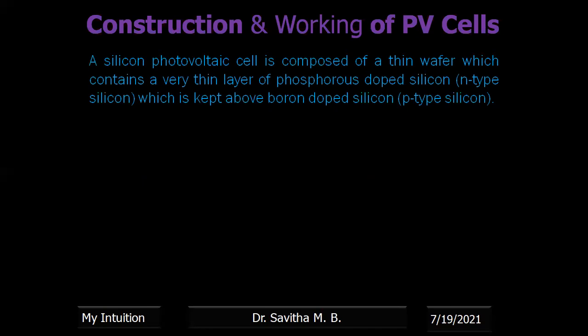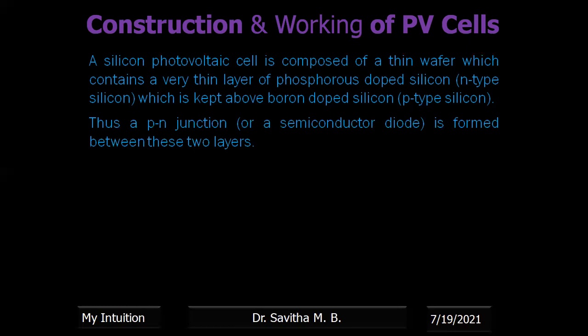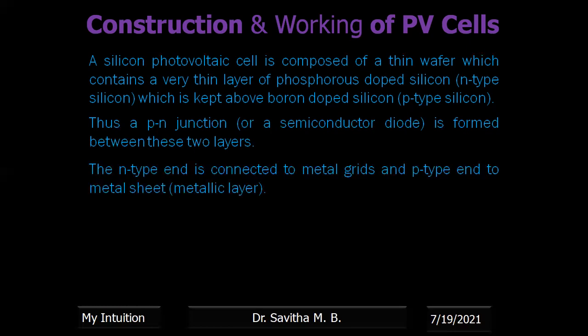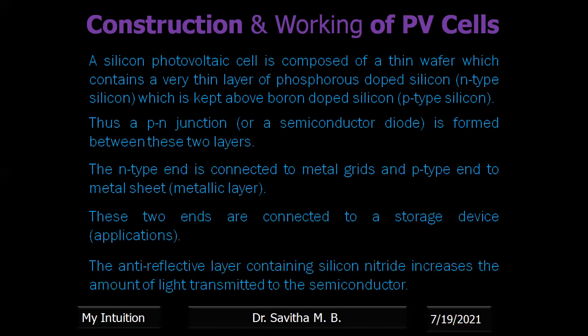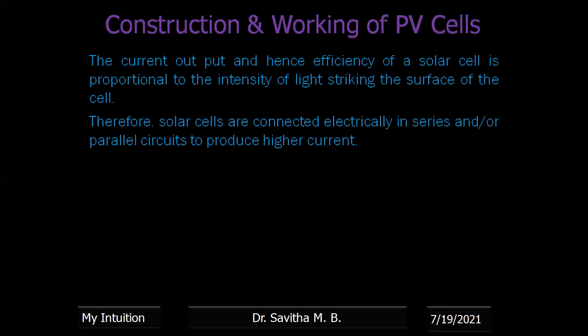The silicon photovoltaic cell consists of a thin wafer of phosphorous-doped silicon (n-type), kept above boron-doped silicon (p-type). A p-n junction is formed between the two layers, also called the depletion region. The n-type end is connected to the metallic grid and the p-type to the continuous metallic sheet. These two ends are connected to a storage device for applications. The anti-reflective layer containing silicon nitride increases the amount of light transmitted to the semiconductor by avoiding reflection.